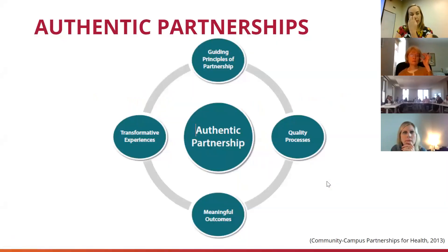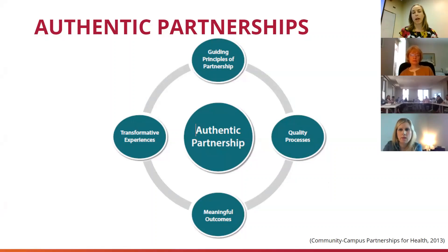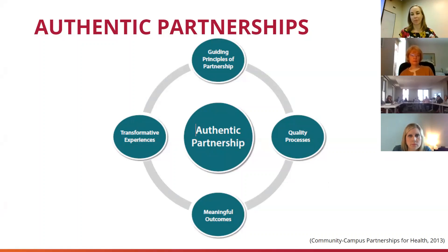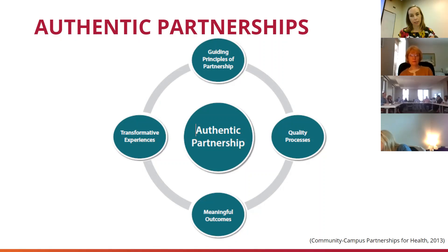As we think about this, the goal is really to have authentic community partnerships. There are four different elements that go into that. One is guiding principles. Another is quality processes — like most things that involve relationships, the process is often more important than the outcome. Meaningful outcomes are also important: having conversations from the beginning about what meaningful outcomes would be to each side. On the higher education side, that's likely student learning outcomes, student impact outcomes, potentially research outcomes, or the faculty member's own personal goals.